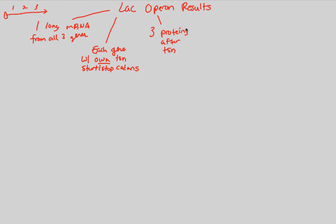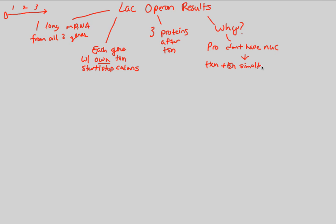Translation has happened, and now we have the proteins. Why this streamlined process to make three proteins? It all goes back to prokaryotes versus eukaryotes. Prokaryotes don't have a nucleus, and that means two distinct processes — transcription and translation — are actually simultaneous in prokaryotes. They happen at the exact same time.